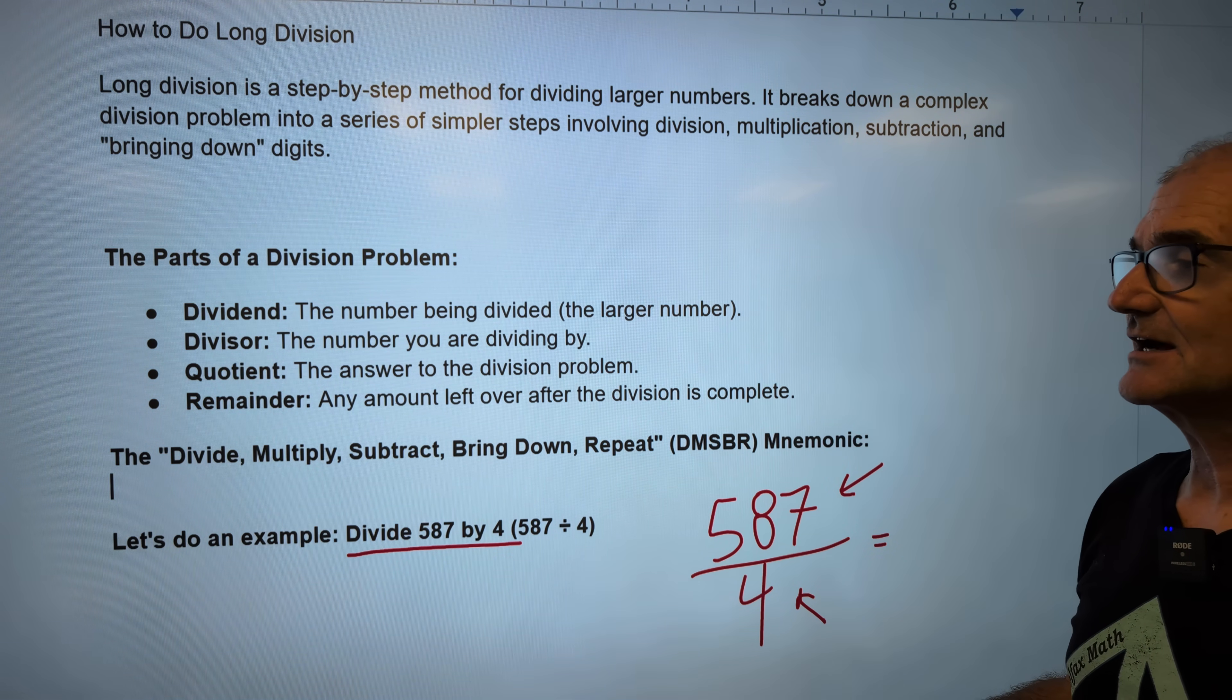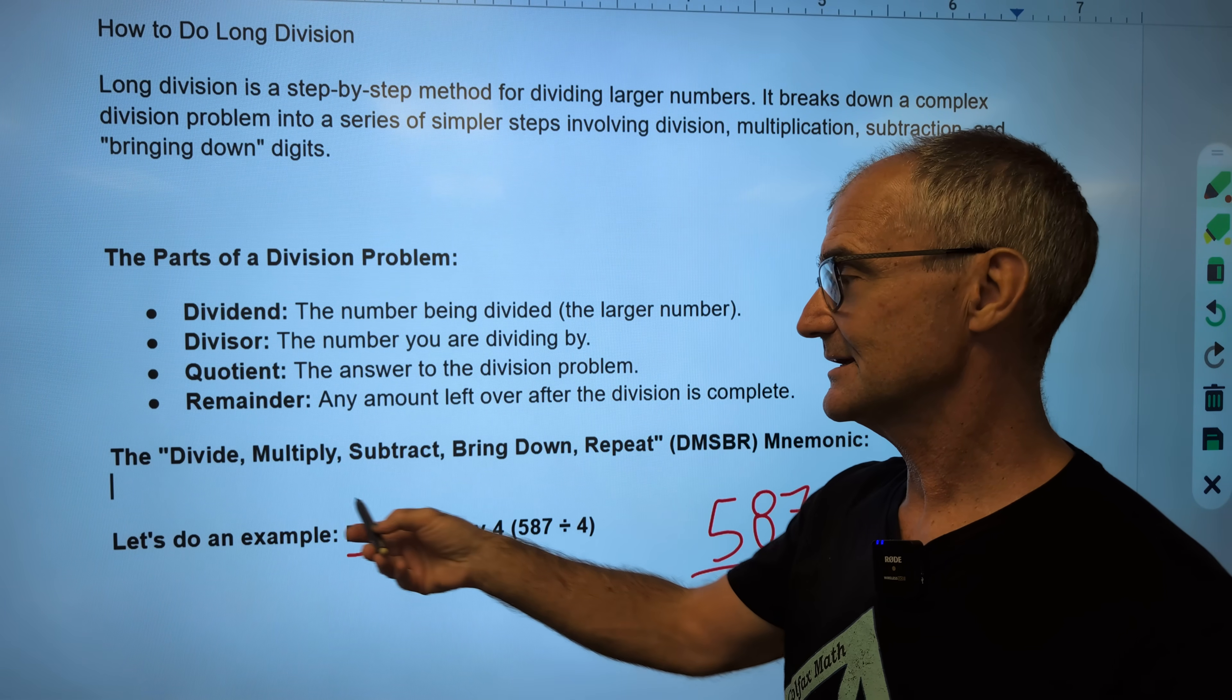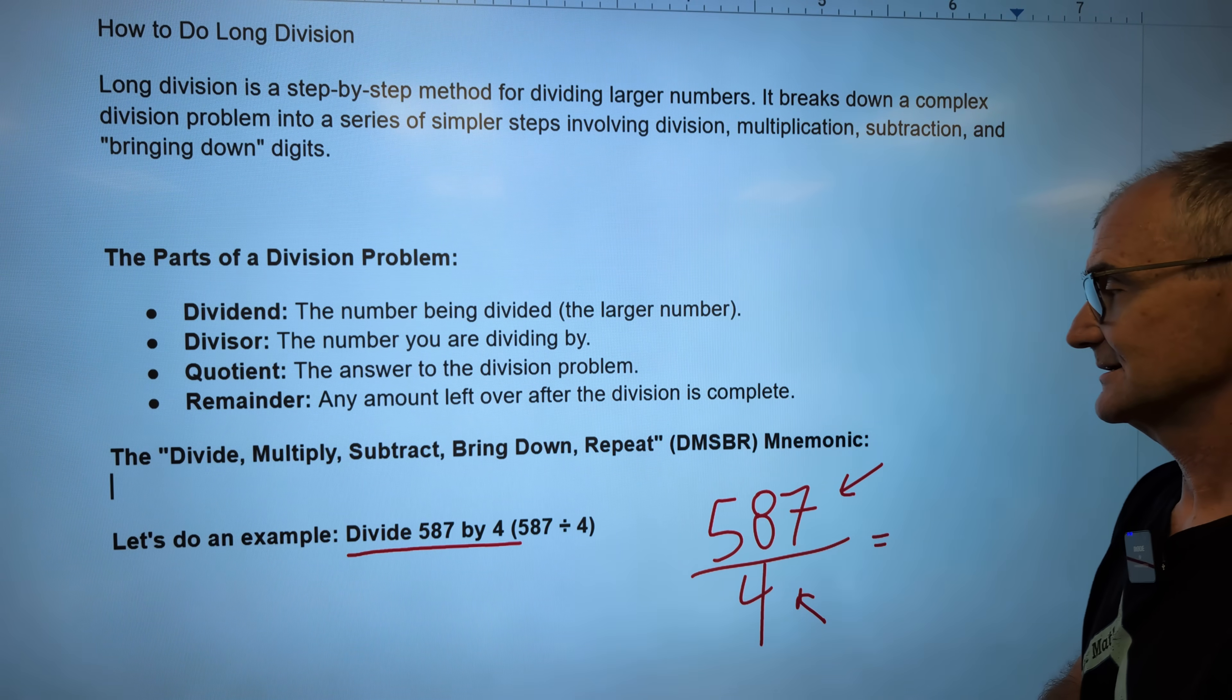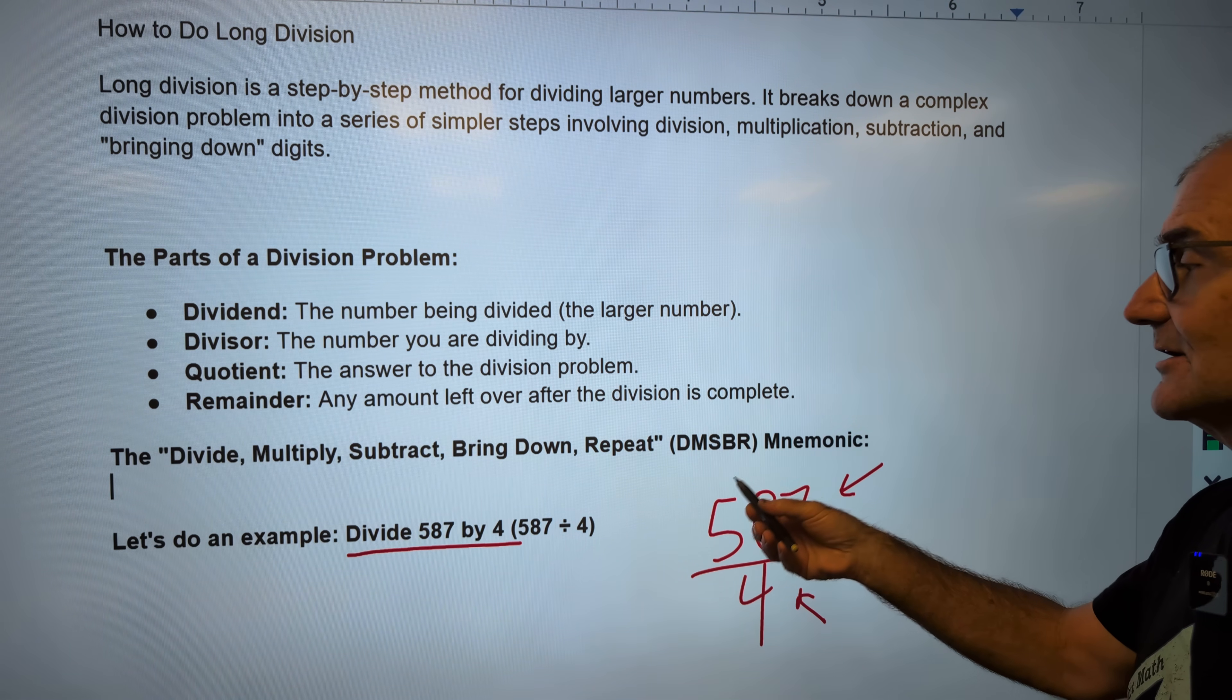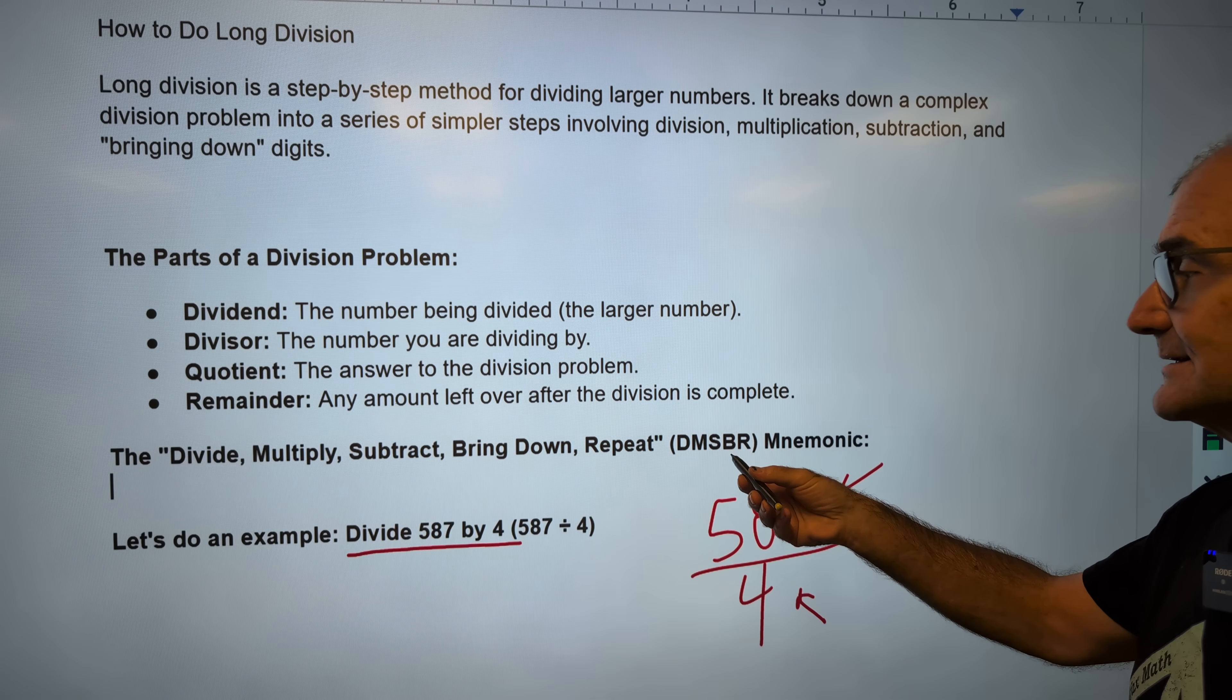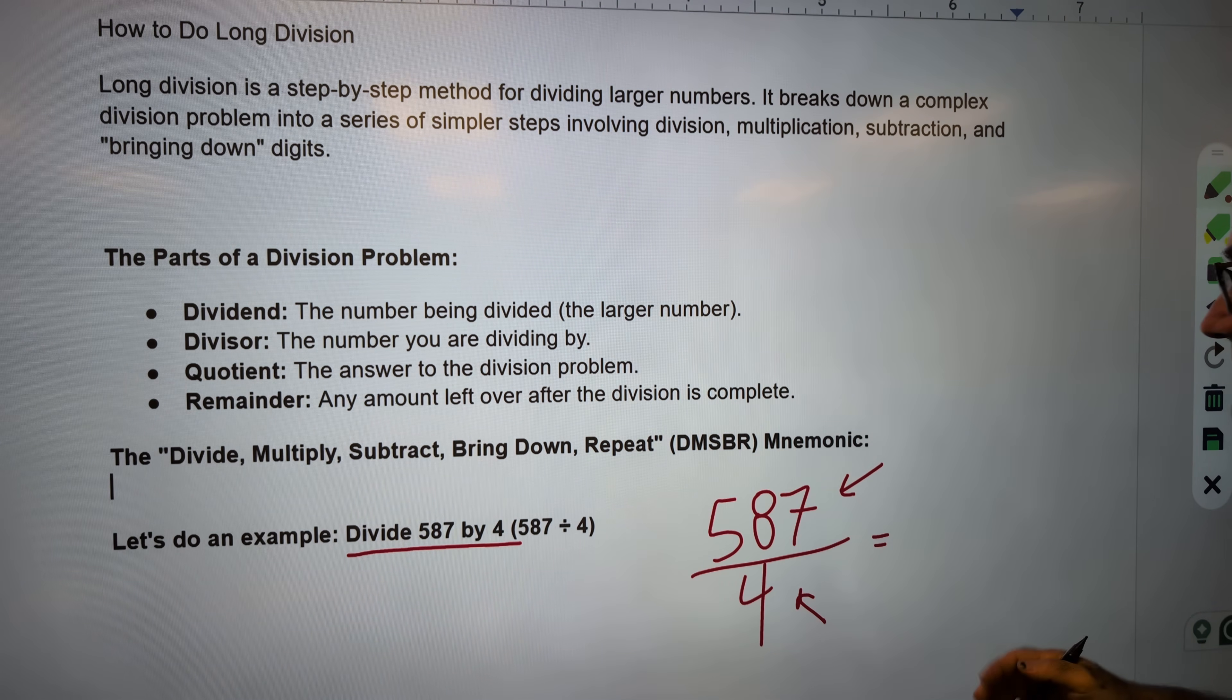The process for long division is this: Divide, Multiply, Subtract, Bring down, Repeat. It's a mnemonic device - DMSBR. Divide, multiply, subtract, bring down, repeat. So let's do this: 587 divided by 4.